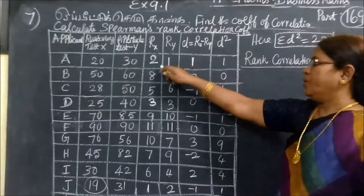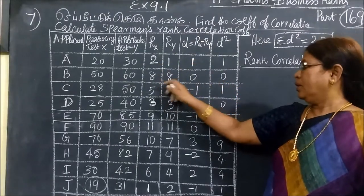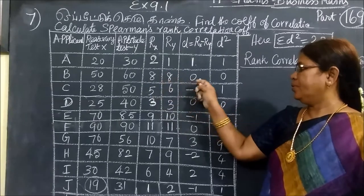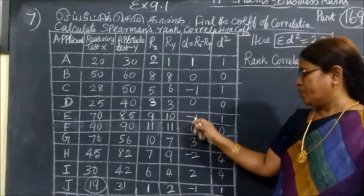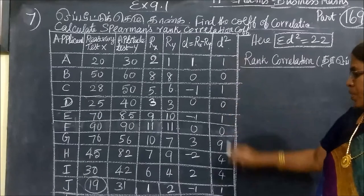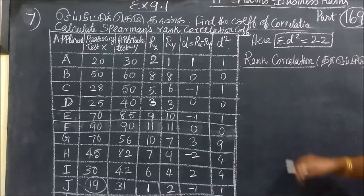Then Rx minus Ry. This is the difference. So 2 minus 1 is 1. Then 8 minus 0. 8 minus 8 is 0. 5 minus 6 is minus 1. 3 minus 3 is 0. That is squared. Square is plus. So rank is plus. So this is the formula.